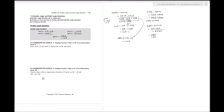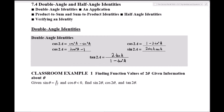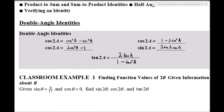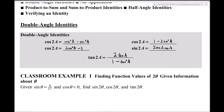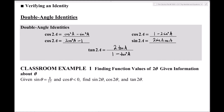To summarize the double angle identities: cosine has three variants, while sine and tangent each have one. Cosine is listed first because it has the most variations.